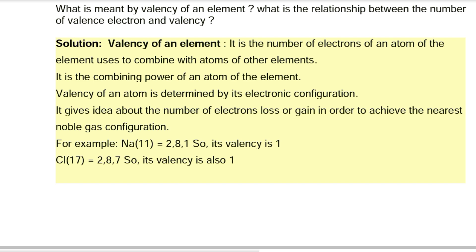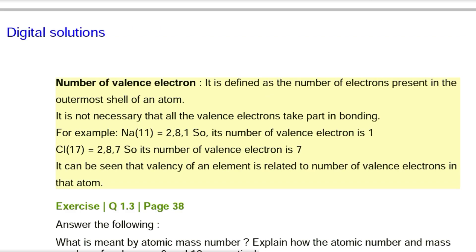For example, Na (atomic number 11) has electronic configuration 2,8,1 so its valency is 1. Cl (atomic number 17) has configuration 2,8,7 so its valency is also 1. It can be seen that the valency of an element is related to the number of valence electrons in that atom.